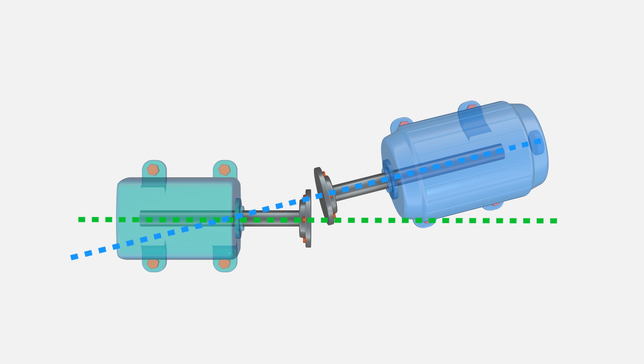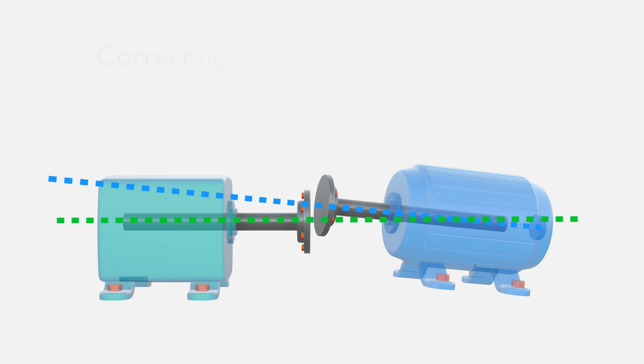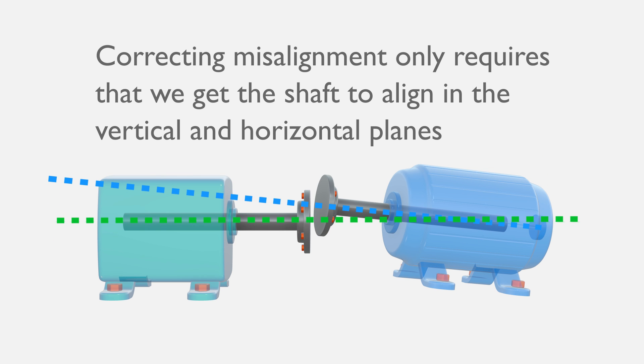While it is much easier to understand misalignment if you can visualise it in three-dimensional space, correcting misalignment only requires that we get the shafts to align in the vertical plane and in the horizontal plane.